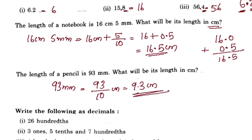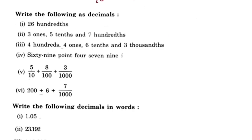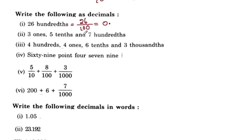Let's write the following as decimals. 26 hundredths: hundredths uses the 1 by 100 formula. This is 26 by 100. The decimal point moves 2 places. So we get 0.26.